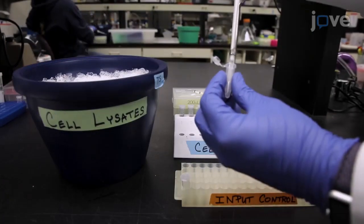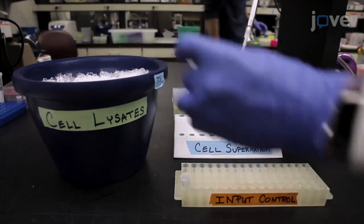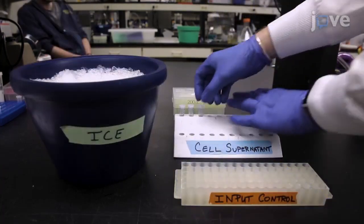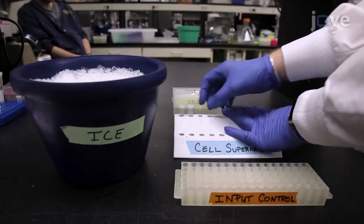Remove 40 microliters of the remaining supernatant to be used as an input control and transfer it to a new tube. Place all of the samples on ice.